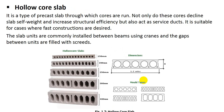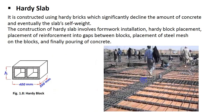Hollow core slab. In this type of slab, hollow cores are created to reduce its weight. These cores not only reduce self-weight and increase structural efficiency, but also act as service ducts. It is suitable for cases where fast construction is desired. The slab units are commonly installed between beams using cranes, and the gaps between units are filled with screed.